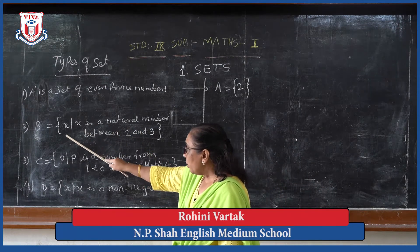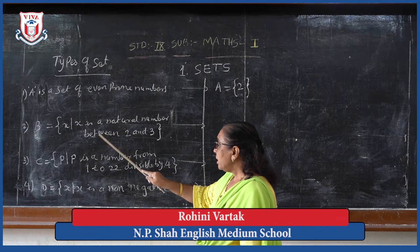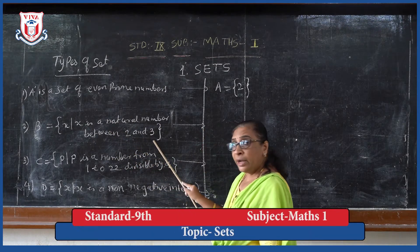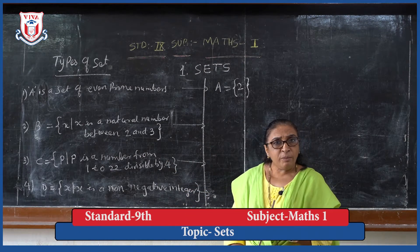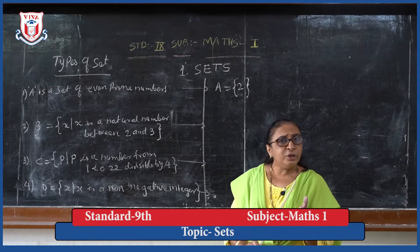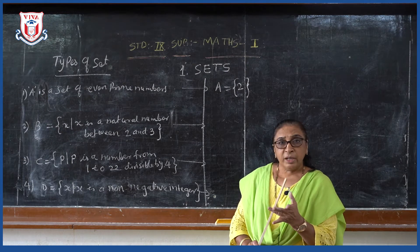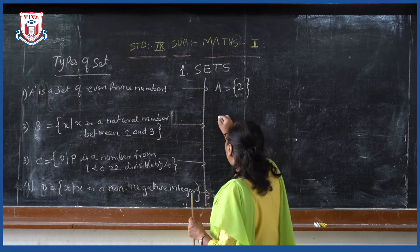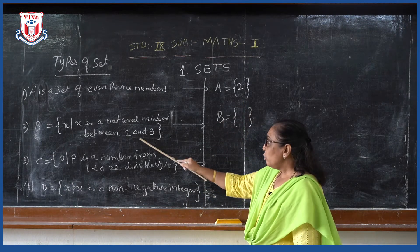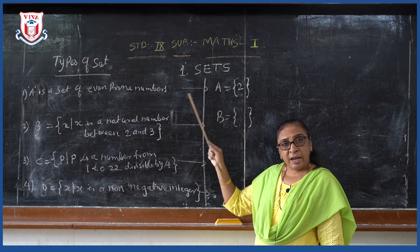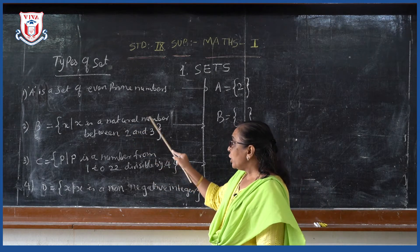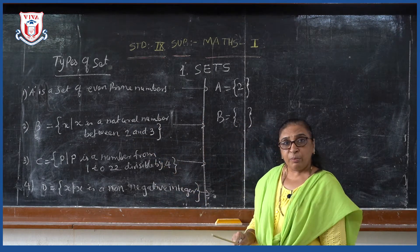Let us write the second example also. B is a set of all X such that X is a natural number between 2 and 3. Natural numbers start from 1, 2, 3, 4, 5, infinite. Is there any number between 2 and 3? No number. There are numbers but rational numbers will come in between 2 and 3. But our condition is natural number between 2 and 3, which is not possible.